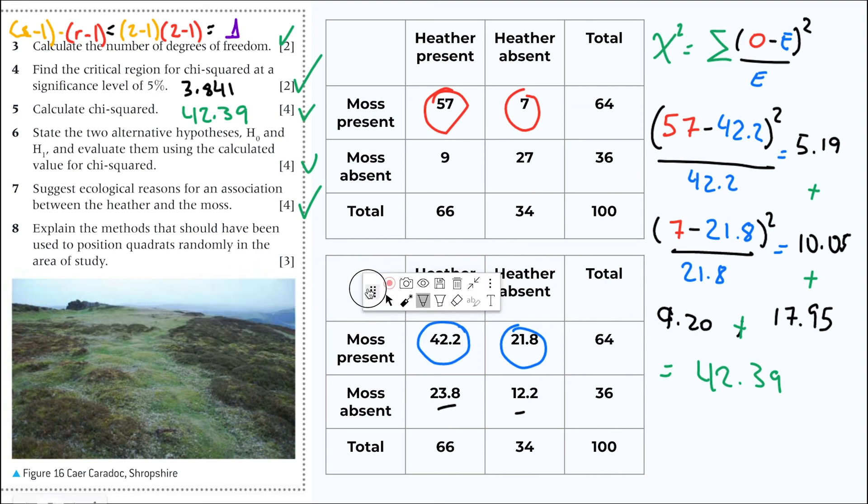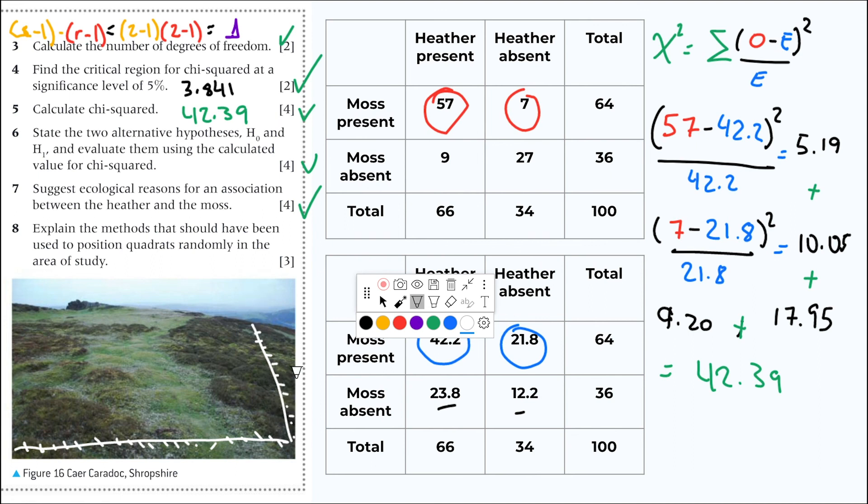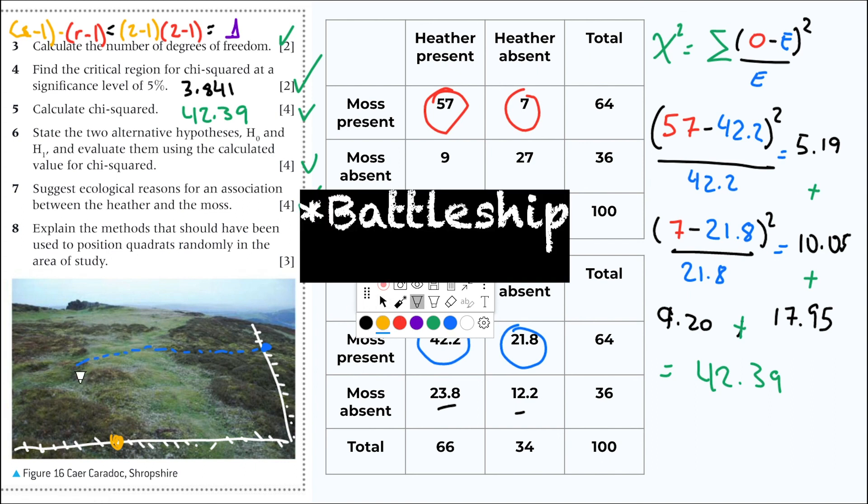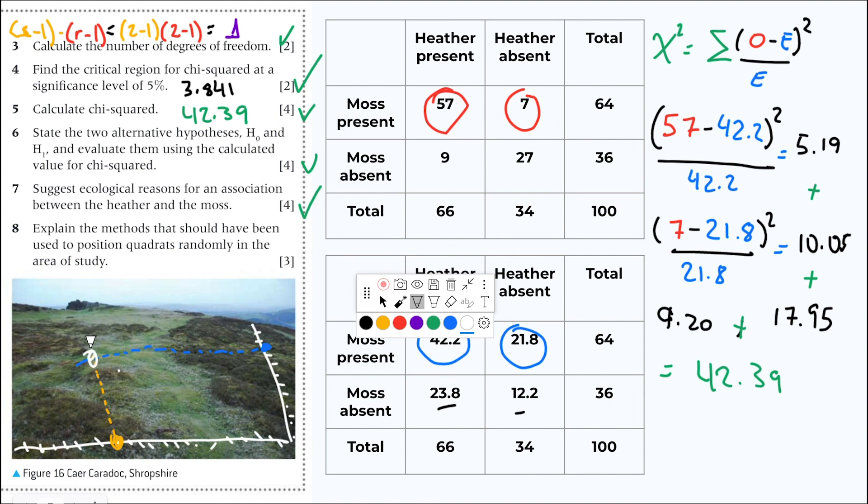And then, explain the methods that should have been used to position the quadrants randomly. So how can I position 100 random quadrants here? Well, I can, for example, I can put a metric tape here. I can put a metric tape. The metric tape has markings, it has numbers here. And I can put another metric tape up there. So I can put at the edges of my field, I can put a metric tape and I can select a random number. I select, randomly select this number here, whatever that is. And then I randomly select this number here, whatever that is. And just like playing Battlefield, you just cross them and bam! You have here the place for your quadrants. You do this 100 times and then you have 100 random positions for your quadrants.